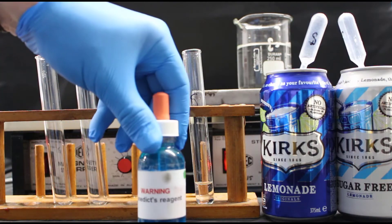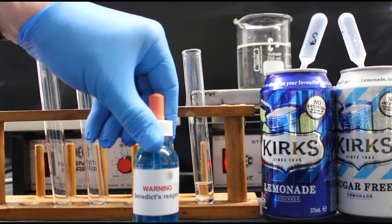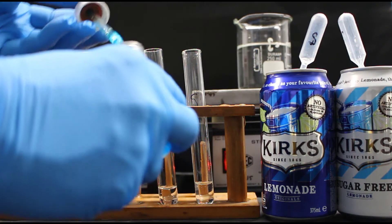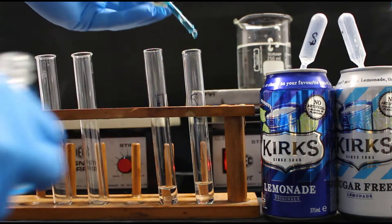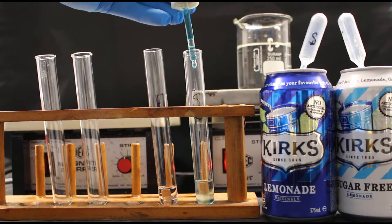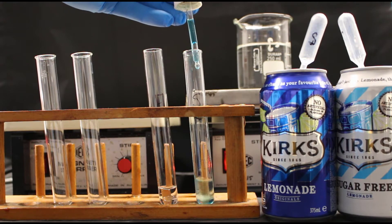Next, I place 20 drops of Benedict's Solution into each of the test tubes. Benedict's Solution is a solution that contains copper and in the presence of glucose it changes into a bright orange or red brick color.